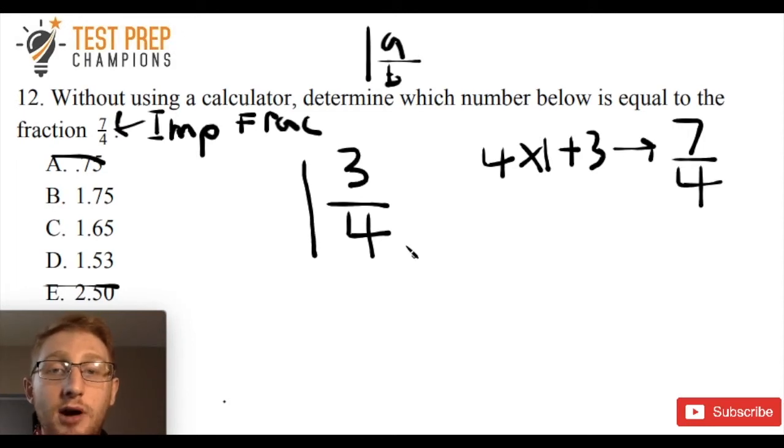You want to memorize that 1 over 4 is 0.25, 2 over 4 is 0.5, 3 over 4 is 0.75, and 4 over 4 is 1.